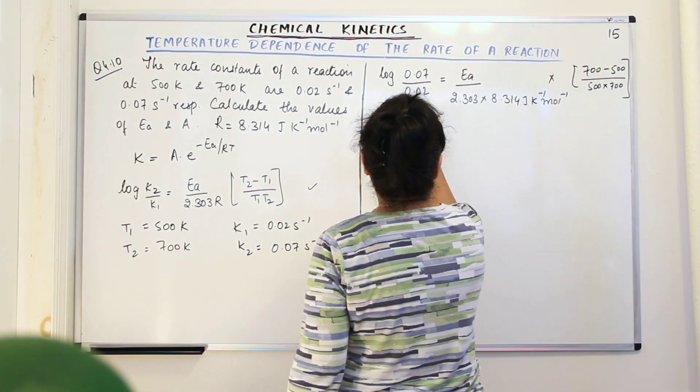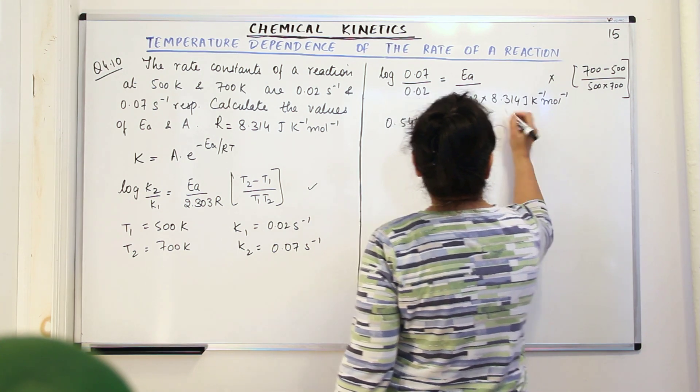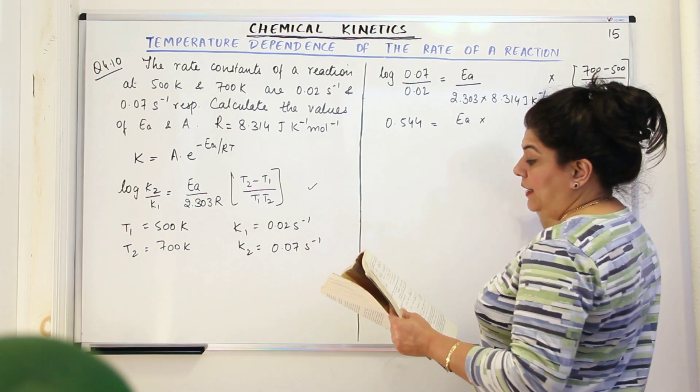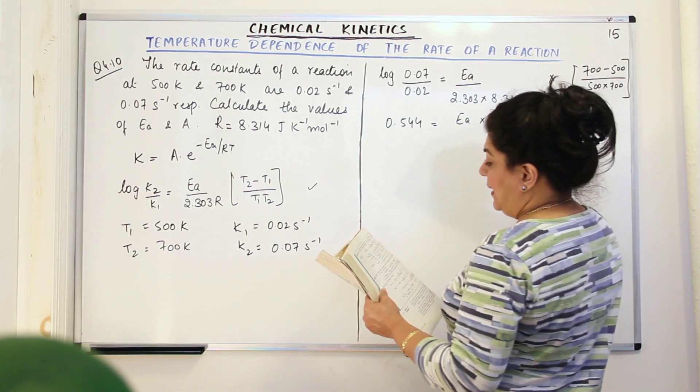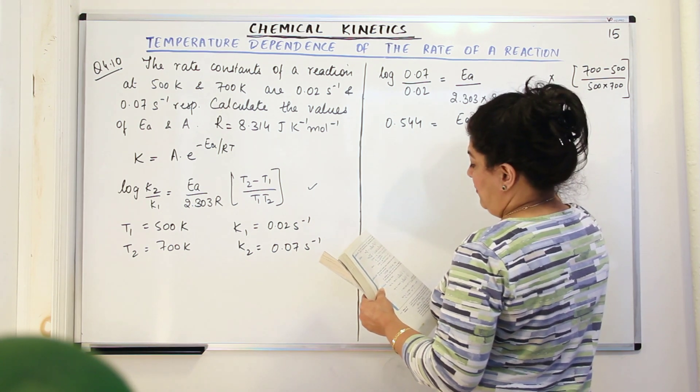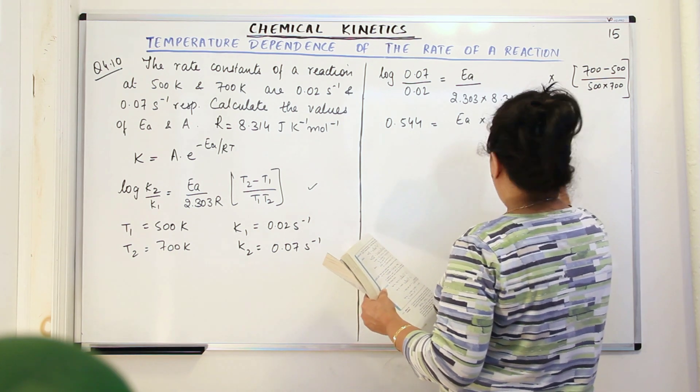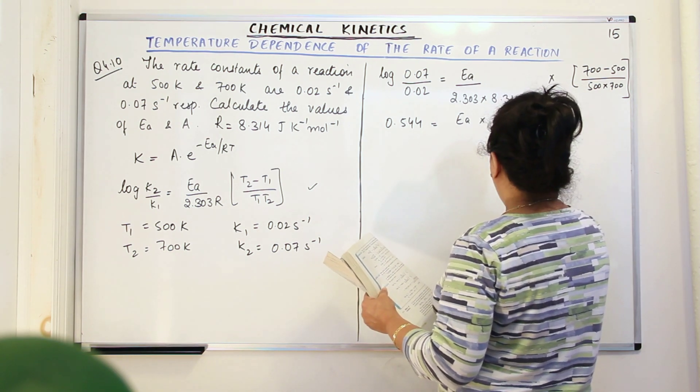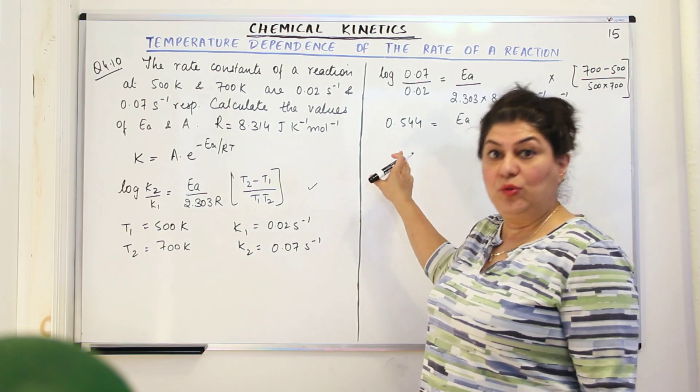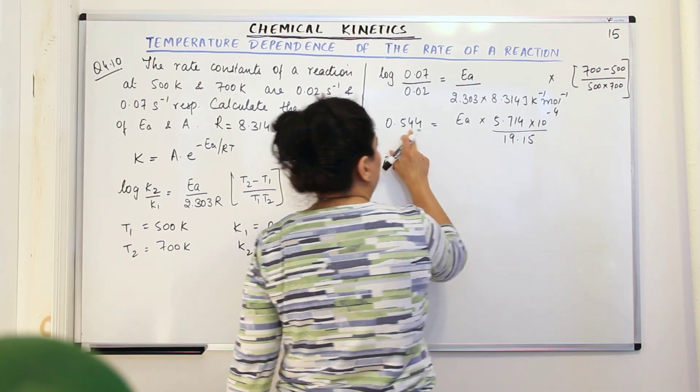You get 0.544. 0.544 would be equal to Ea. And now if you solve all of this in the numerator part and the denominator part, in the numerator you get 5.714 into 10 to the power minus 4, and in the denominator you get 19.15. From this now you can calculate Ea. Ea therefore would be equal to, to get Ea, you'll bring all of this to this side.